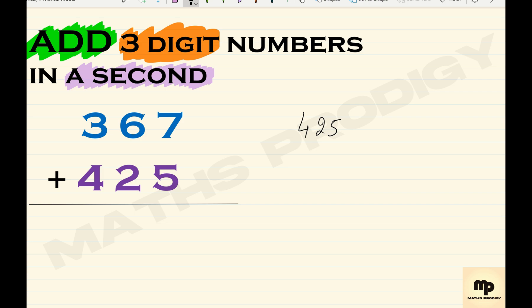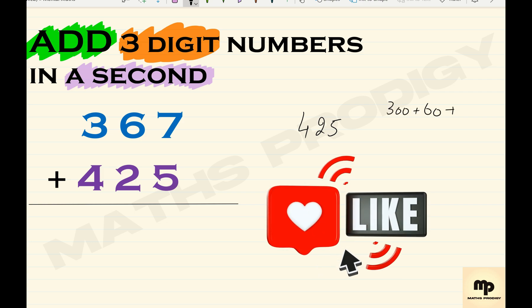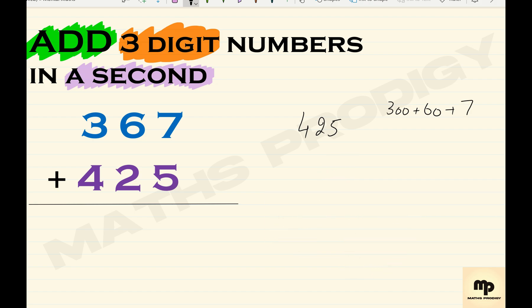Split 367 in expanded form, that is 300, 60, and 7. First, simply in your mind, do 425 plus 300, that will be 725. Then add 60, that will be 785.